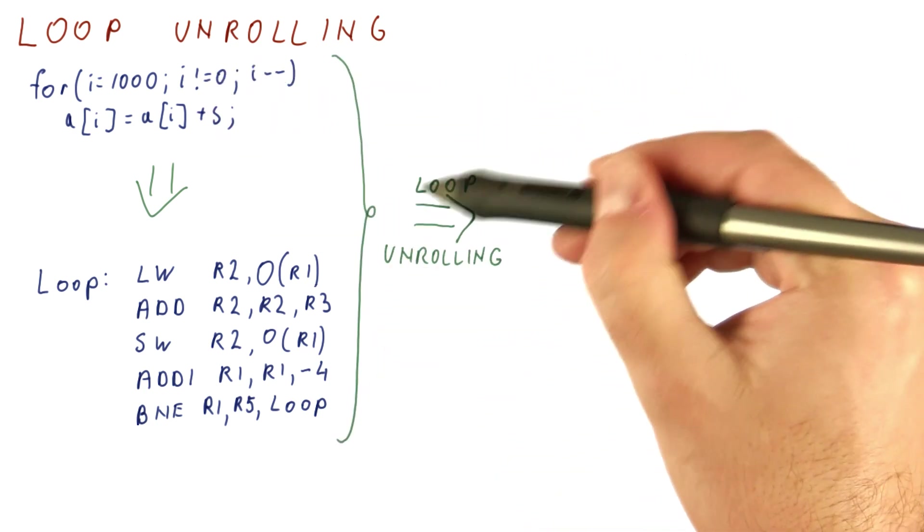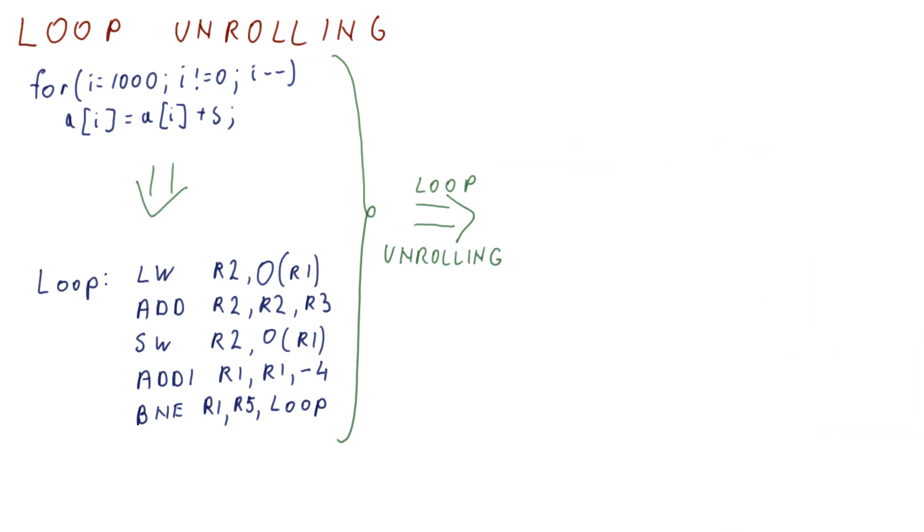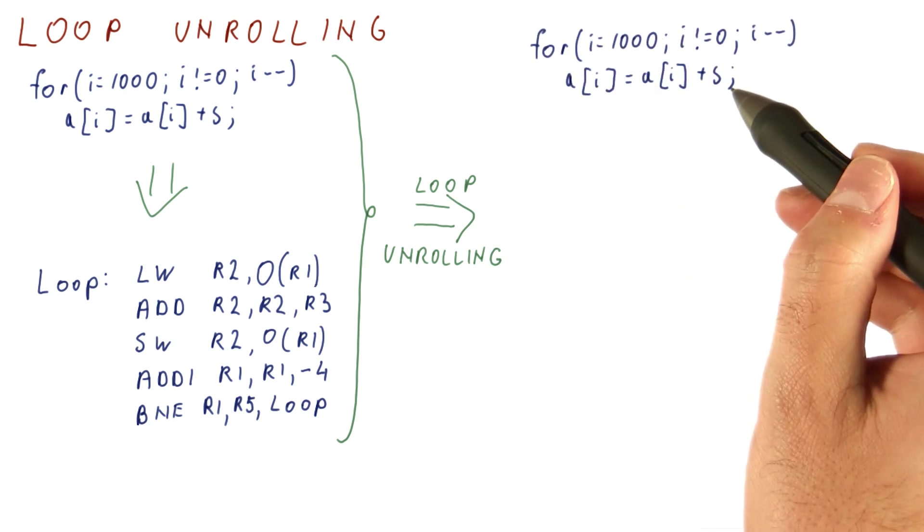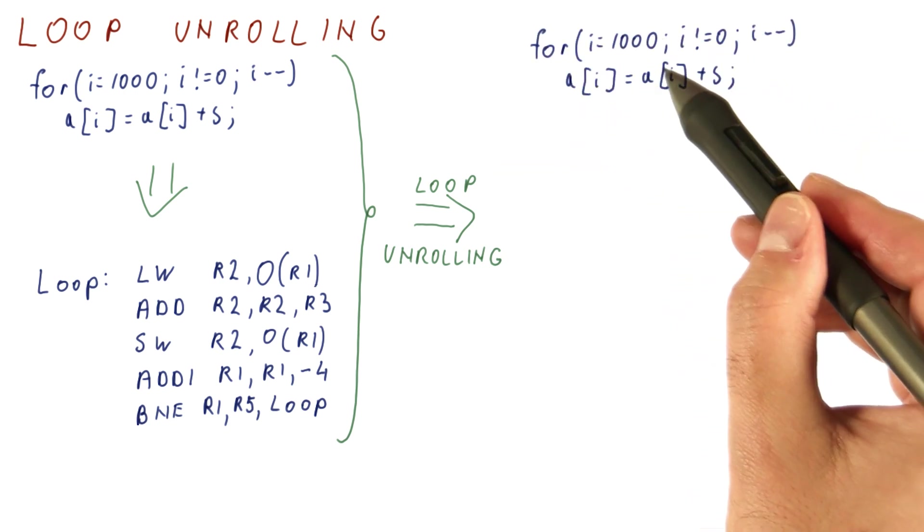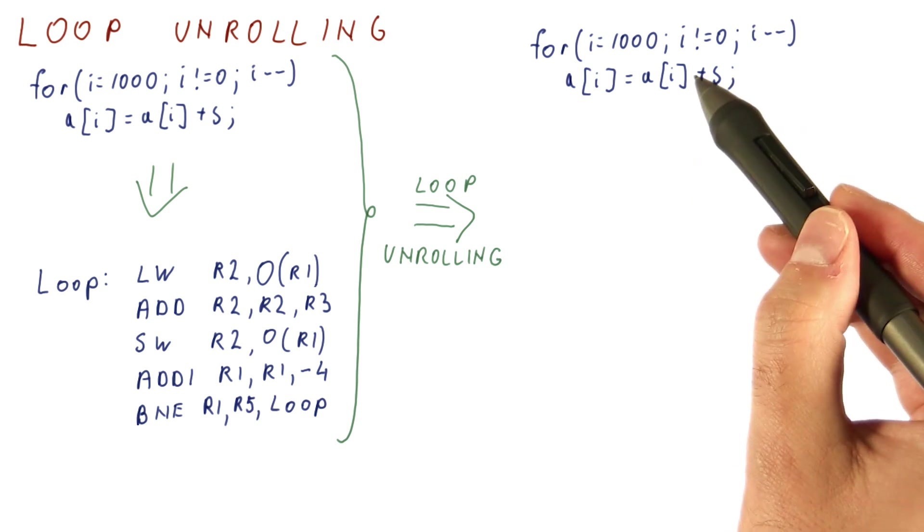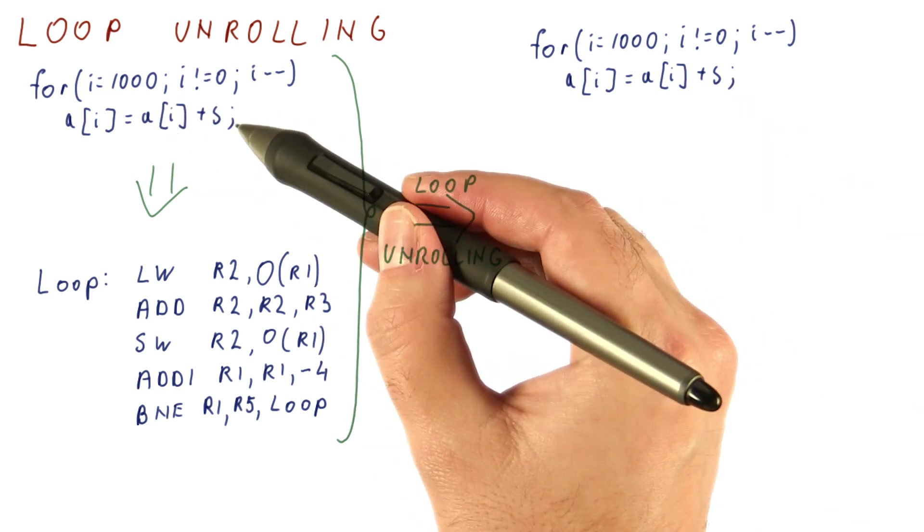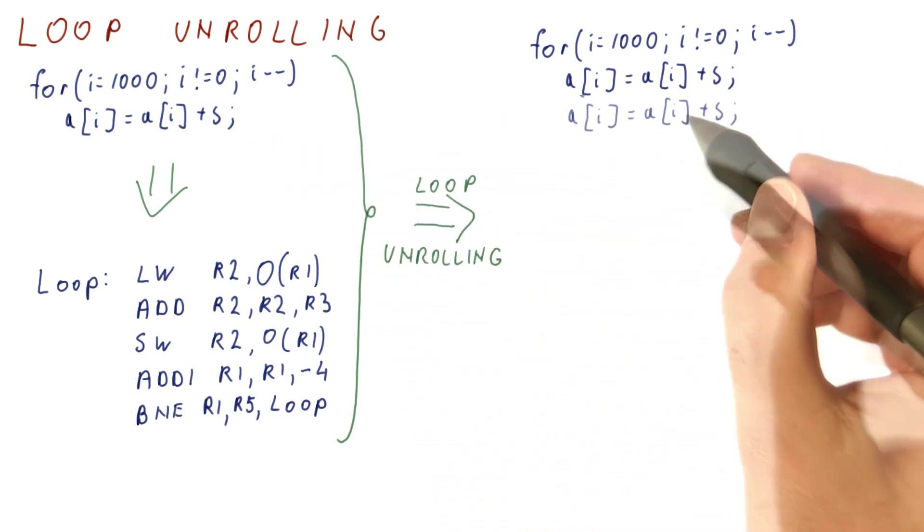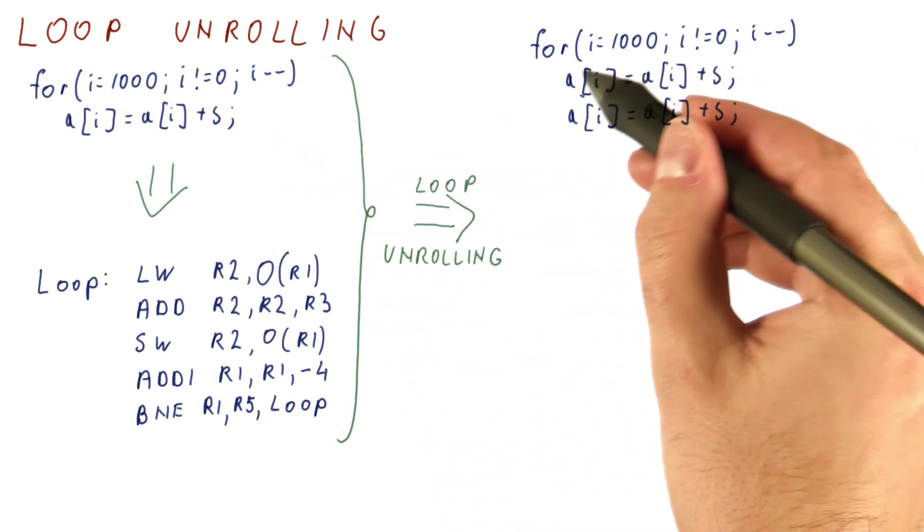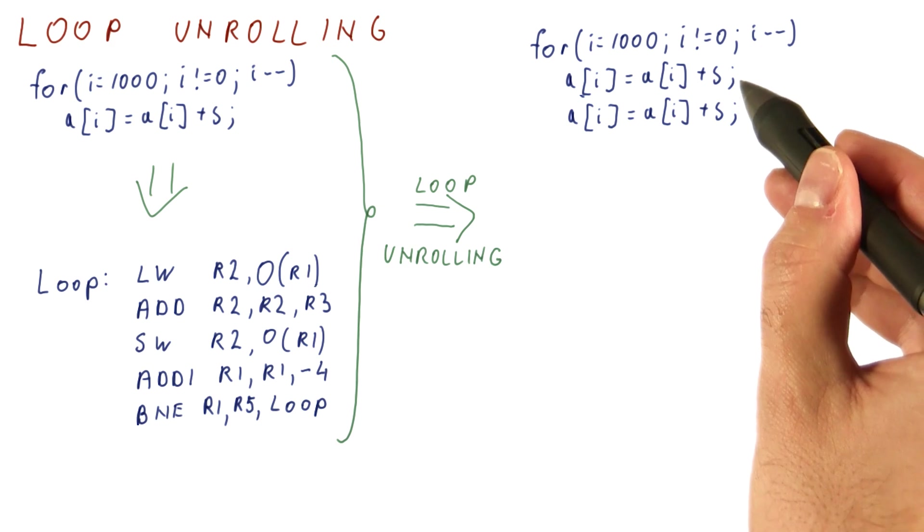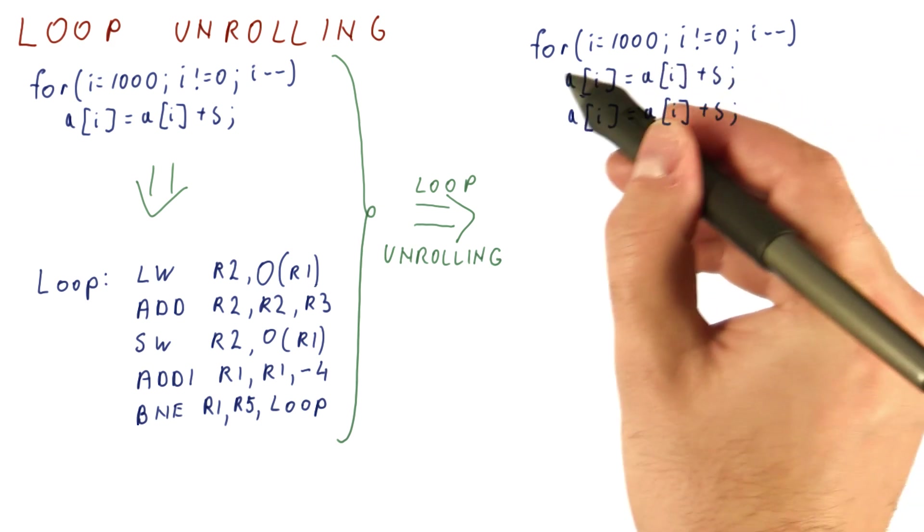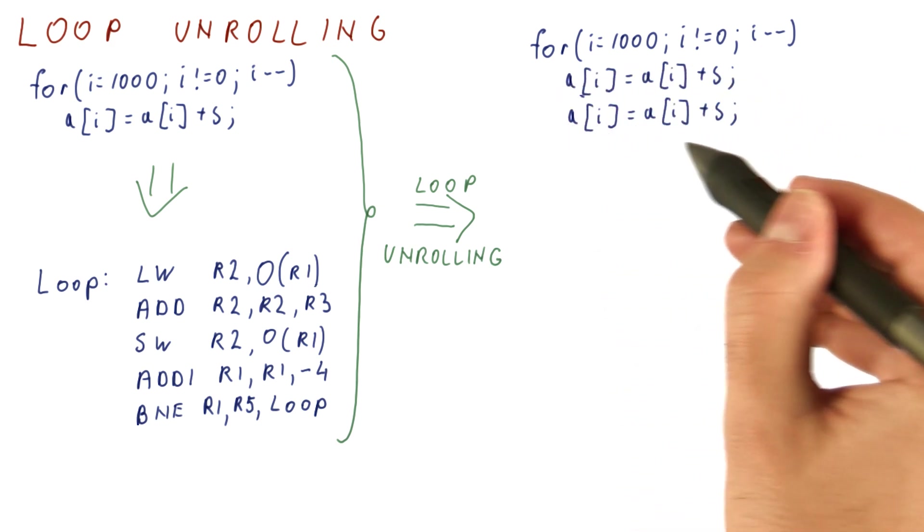Now let's apply loop unrolling to this loop. We will do what we call unrolling once. We unroll the loop by making each iteration of the new loop do more than one iteration of the old loop. So when we unroll once, each iteration of the new loop will be doing the work that it should be doing plus the work of the next iteration.